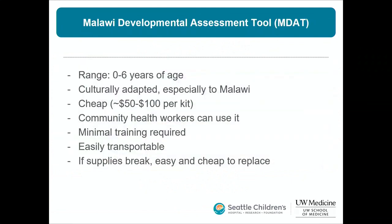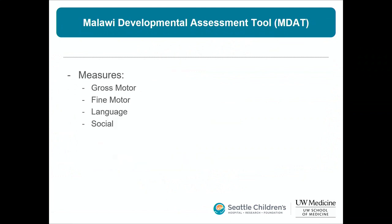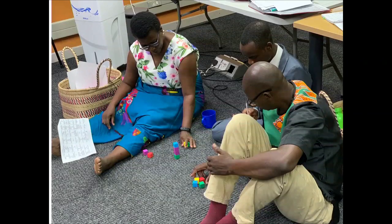The MDAT — Malawi Developmental Assessment Tool — was created based on the Denver screener, goes up to age six, and is culturally adapted to Malawi. It's inexpensive: essentially free to access online, with a kit costing about $50 in materials from a local market. It's easily transportable, requires minimal training, community health workers can use it, and broken components can be cheaply replaced.